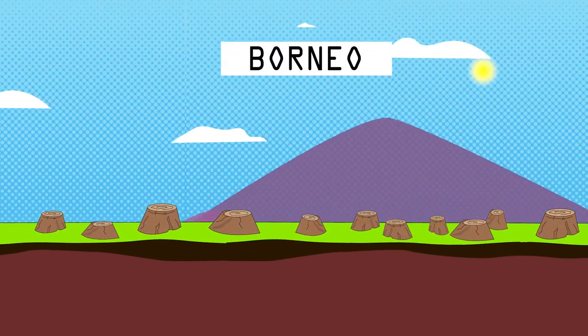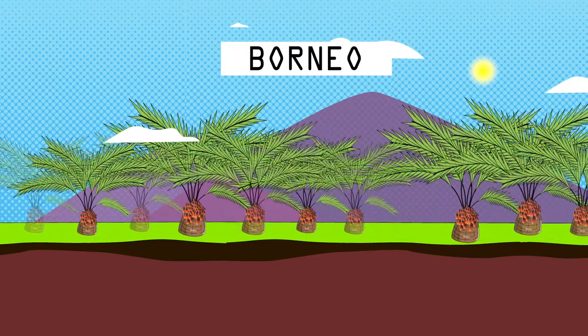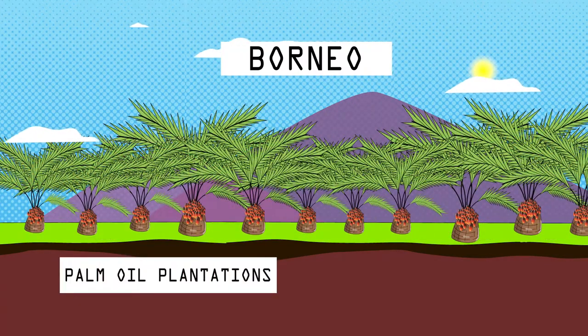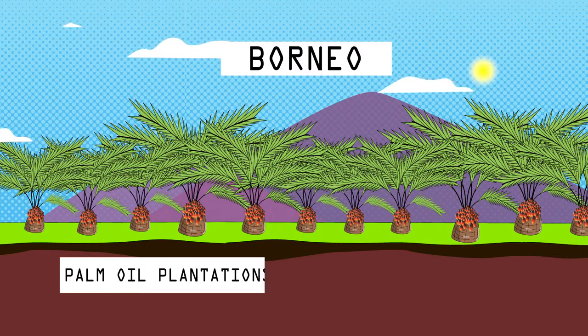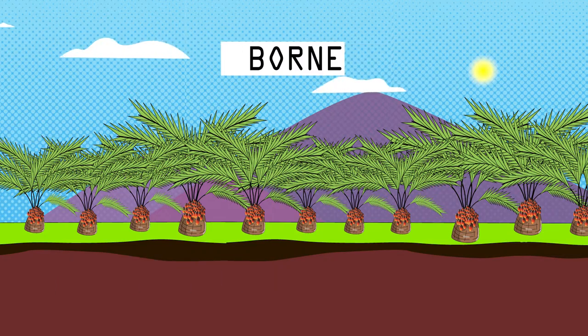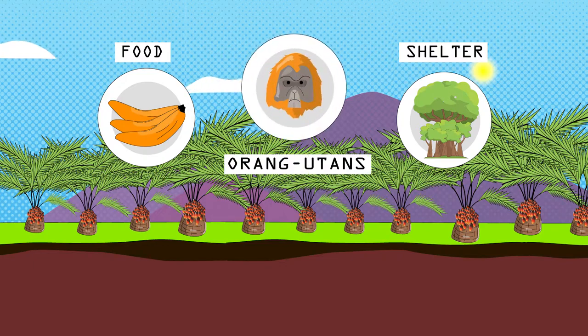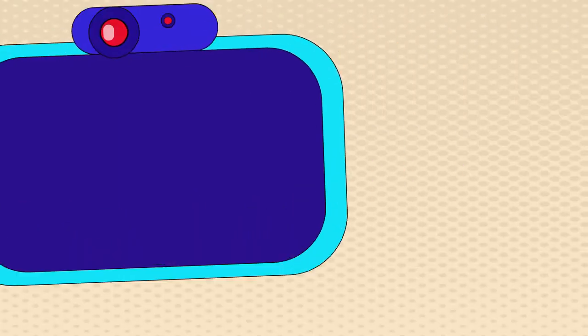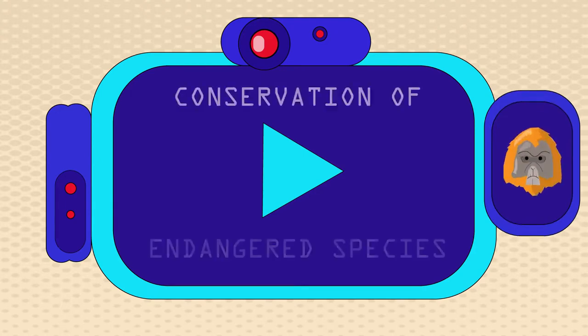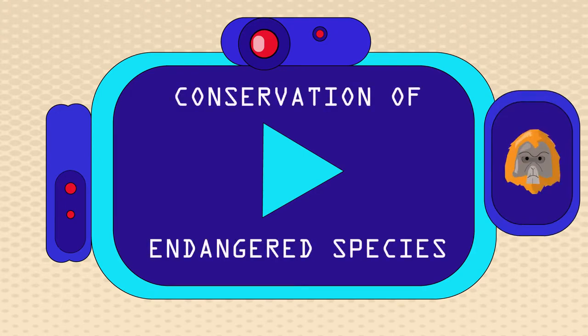For example, in Borneo, rainforests are being cut down to make room for palm oil plantations. The species that live in the rainforests cannot survive in the plantations. They may not be able to find food or shelter, like orangutans who are an endangered species. You can find out more about endangered species and how conservation is helping them by watching this video.